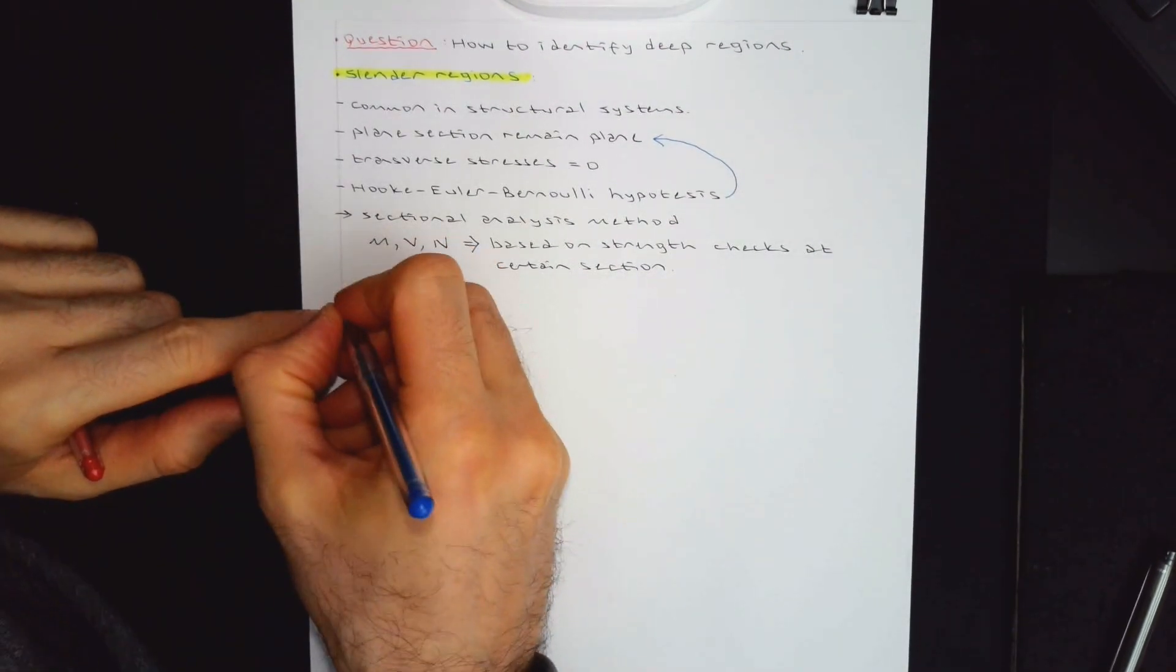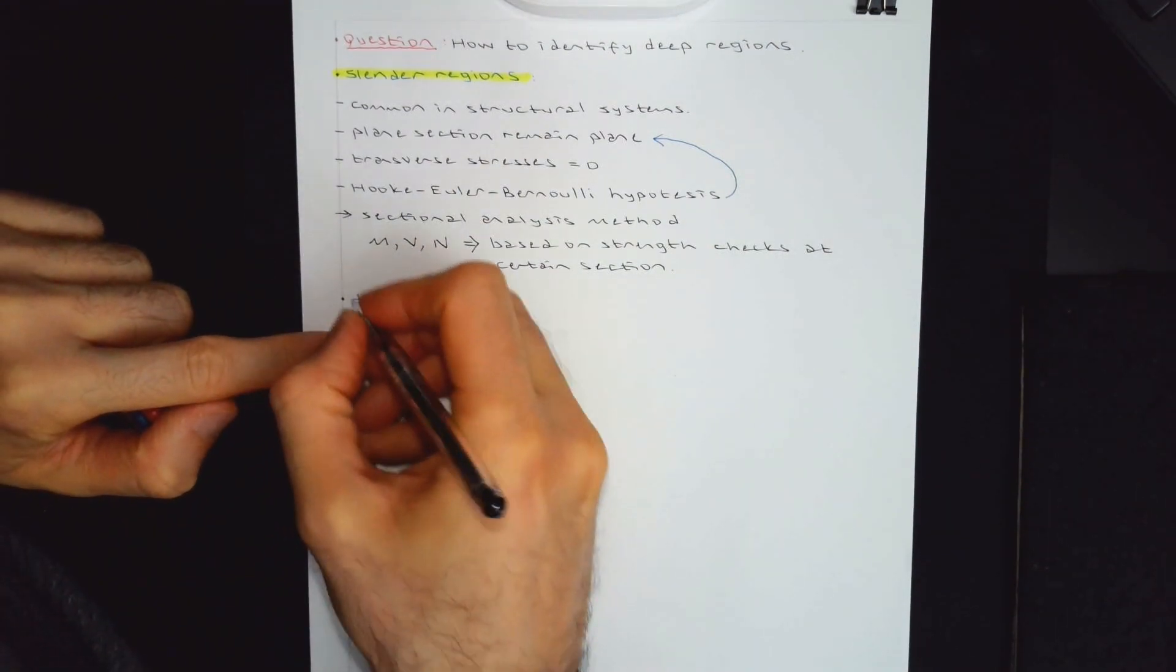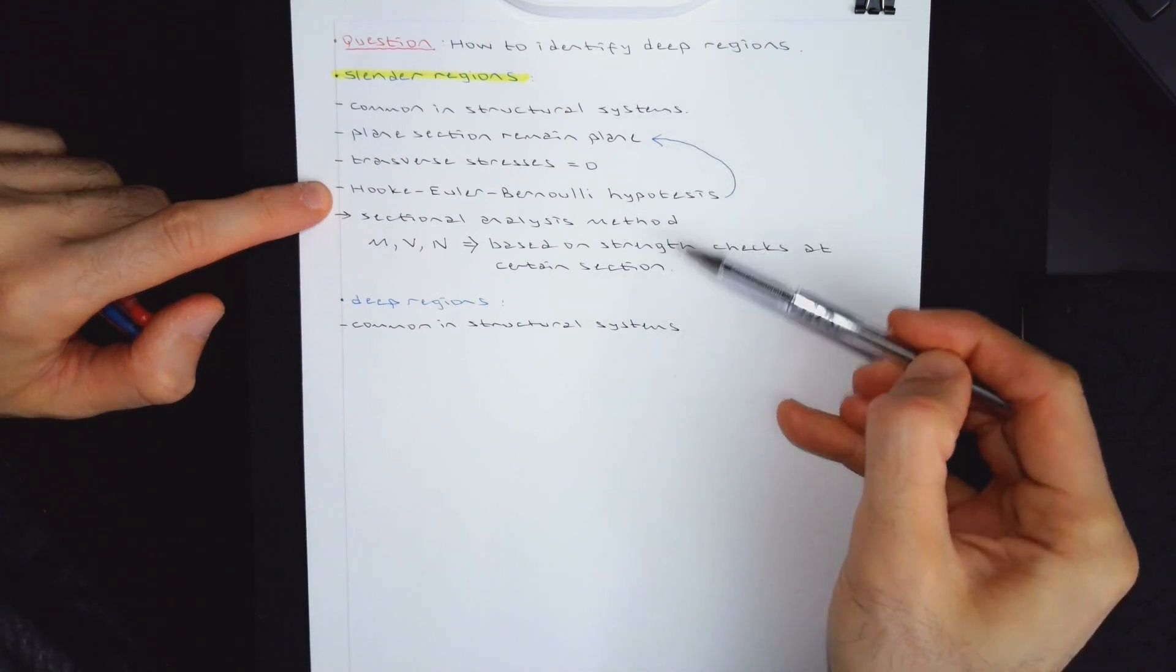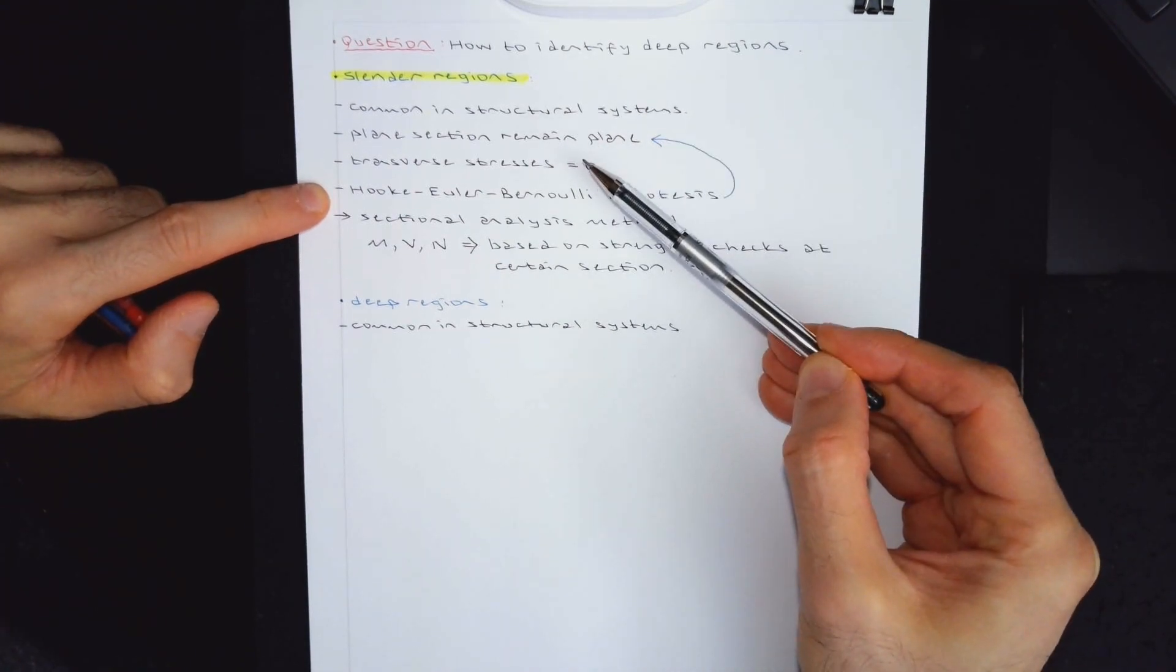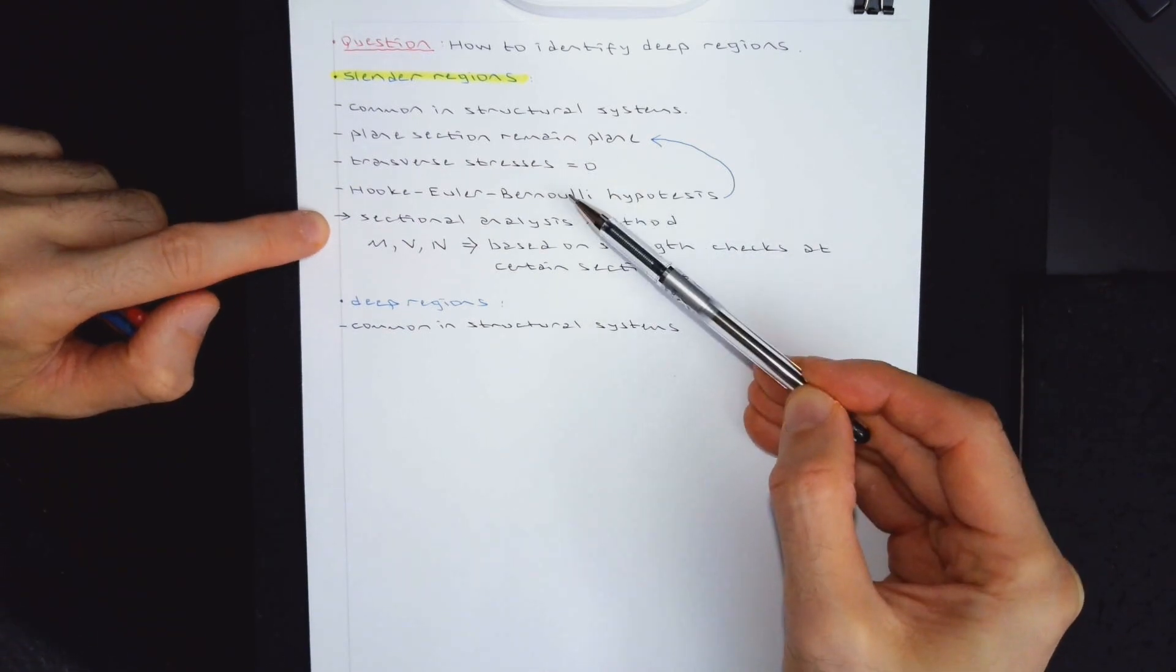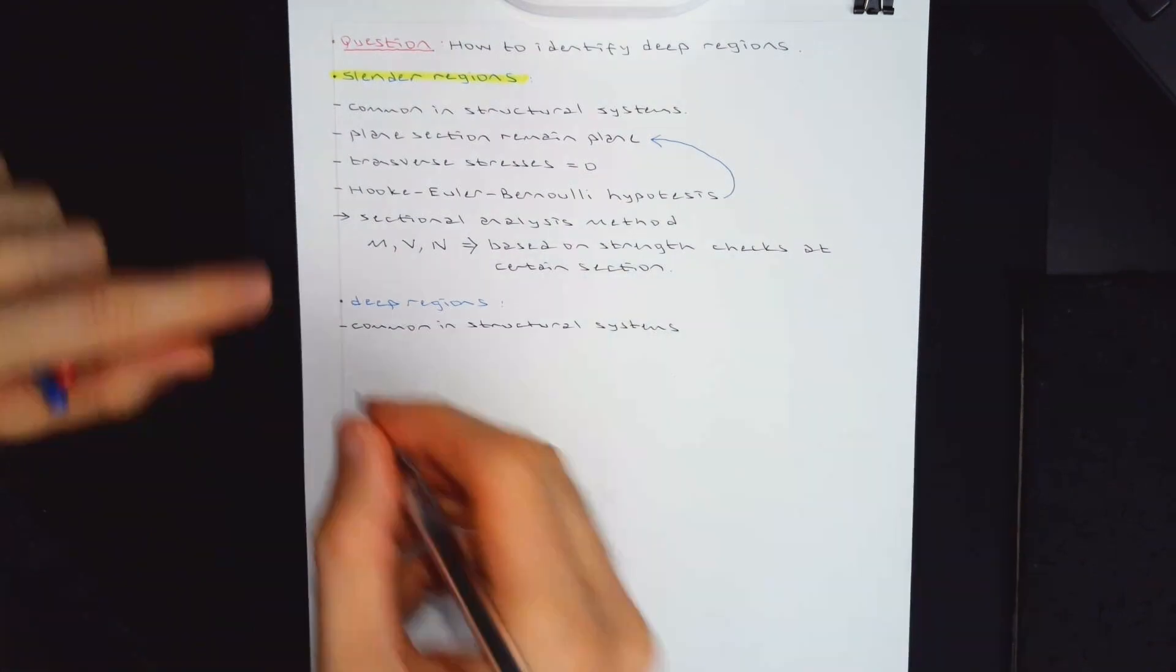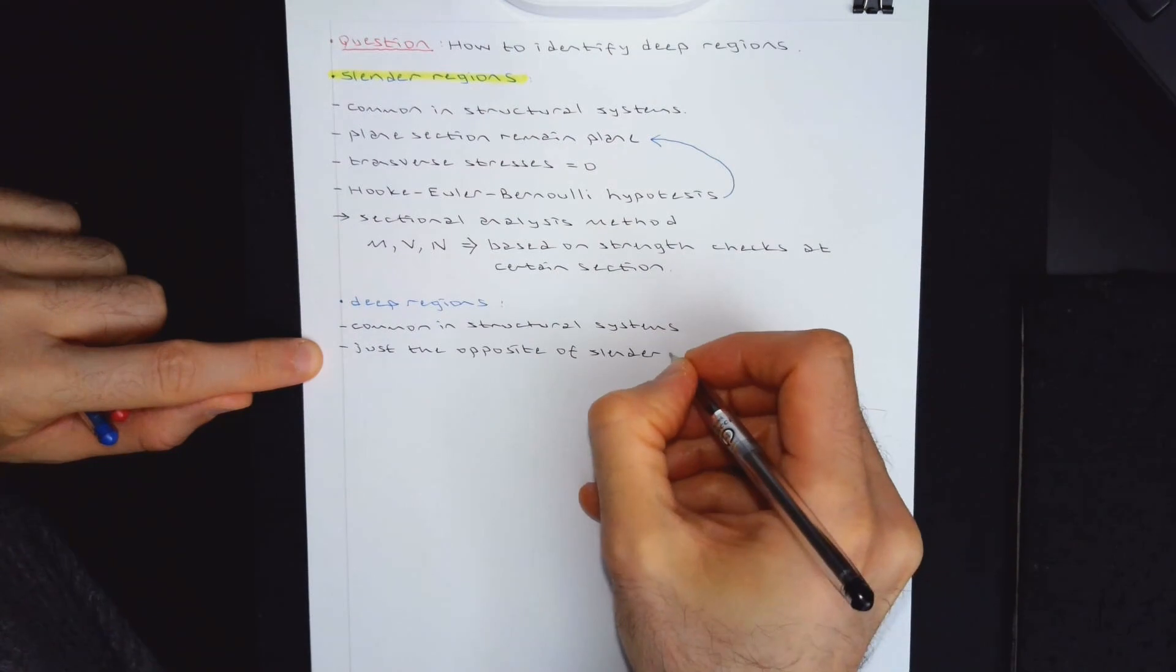The second one is deep regions. This is much more common than what you would think. So I'm also going to say common in structural systems. It's just opposite. I don't want to repeat all of these. Plane sections do not remain plane. Transverse stresses are not zero. Hooke, Euler, Bernoulli hypothesis do not apply. You cannot do sectional analysis.